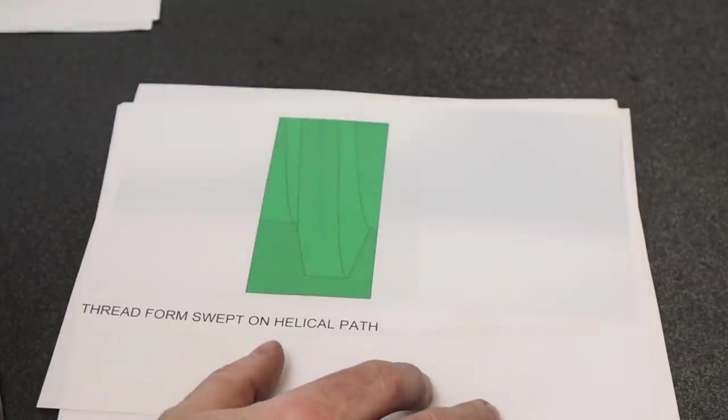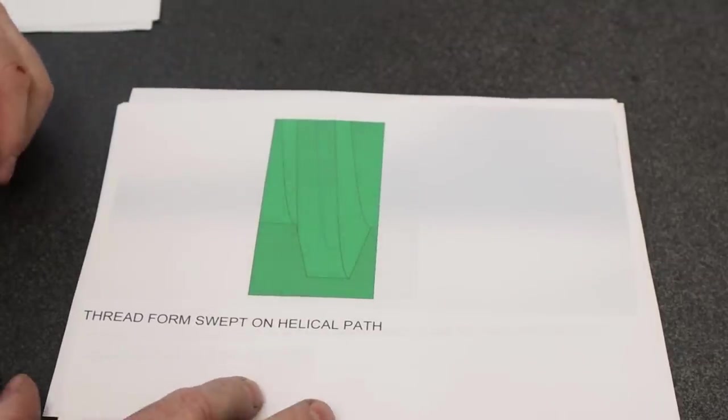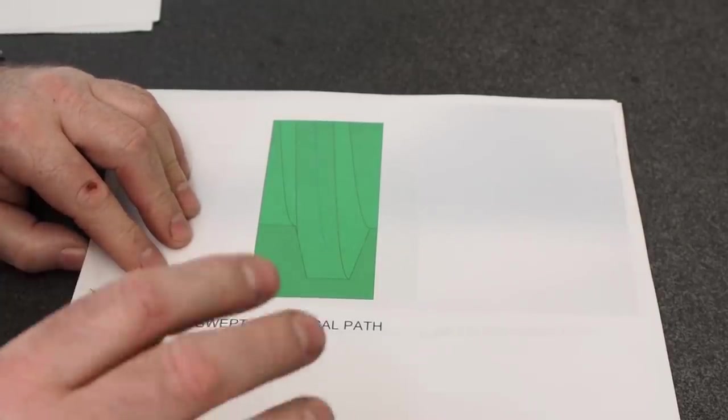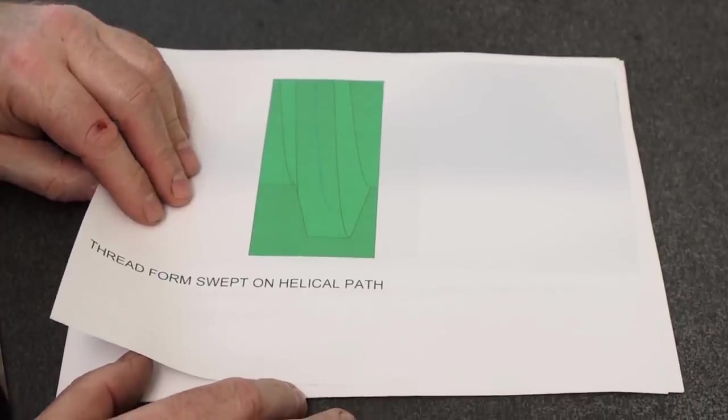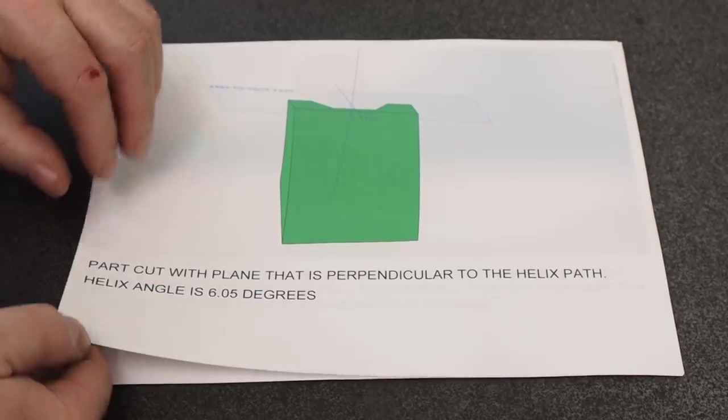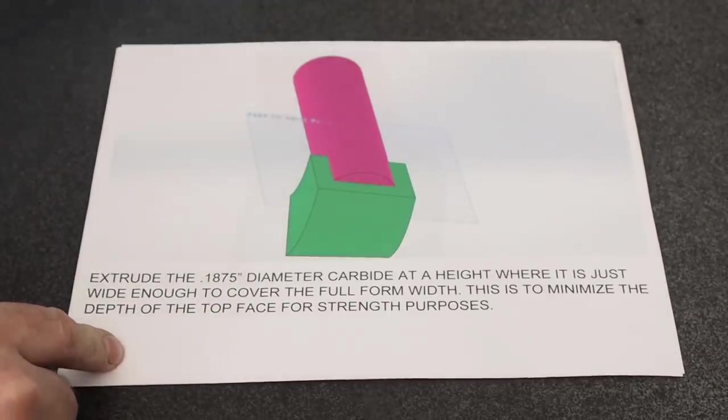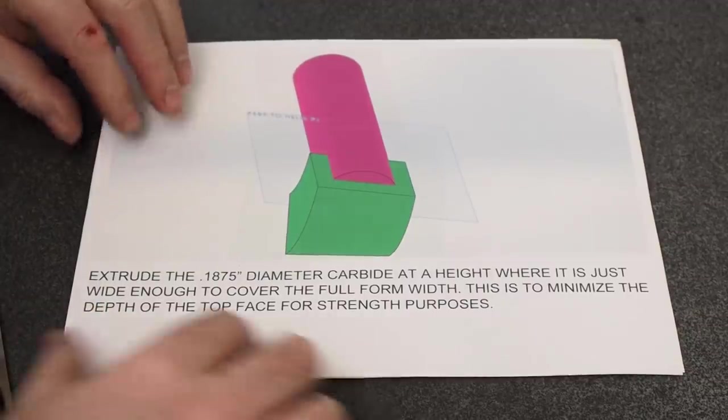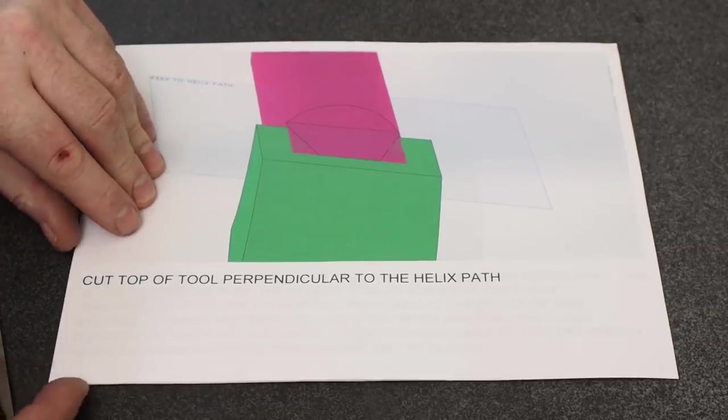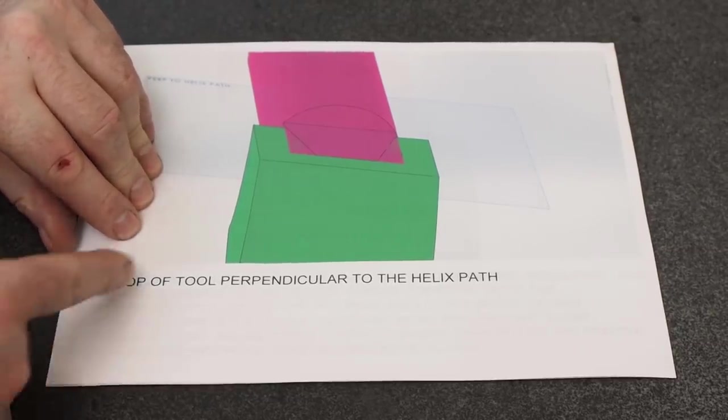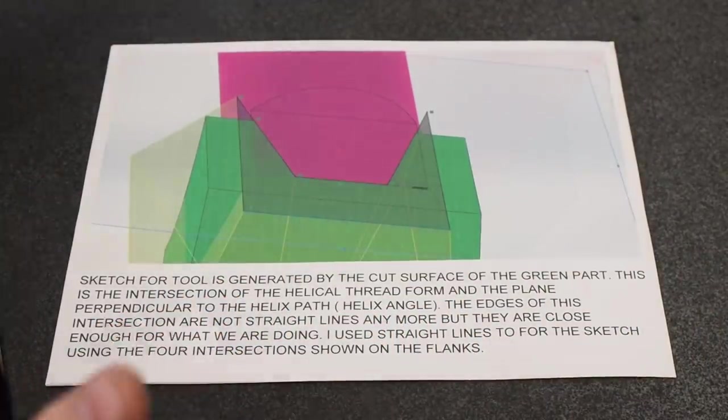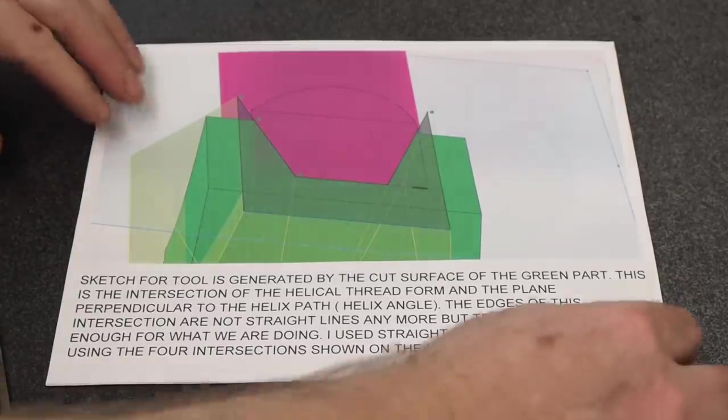By modeling it like that, you can see where all the reliefs have to be, everything on there. It always bugged me because when you're working on compound angles, things will change slightly on you. You've got to be very careful. By modeling it, you can capture all that. These are just some of the sheets that he sent of his modeling.